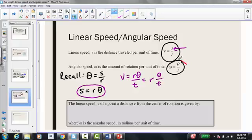And if you see, this is in fact what we have here, theta over t. So I can get my final equation, v equals r times omega, which is my angular speed.